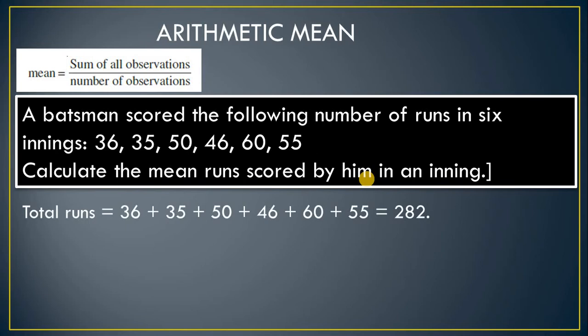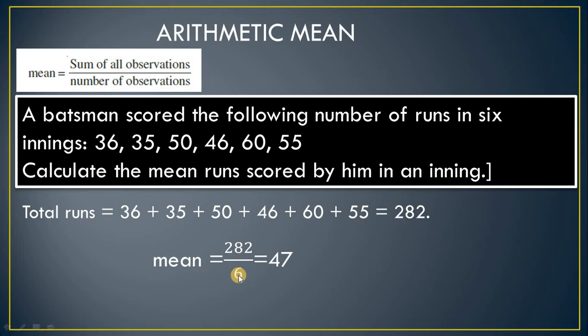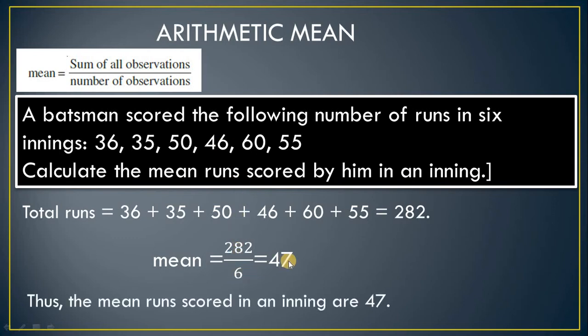You do the total first. The total here is 282. Divide by the number of observations — one, two, three, four, five, six — so we divide by six and get the answer 47. It means the average runs scored per inning is 47.